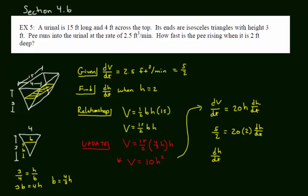I'm going to simplify here. I'm going to divide both sides by 20 times 2. That's going to be equal to 1 over 16 after I simplify. And that's going to be feet per minute. That is the end of Example 5.